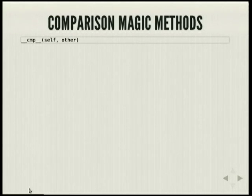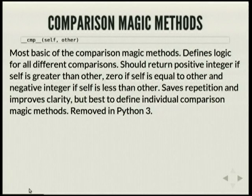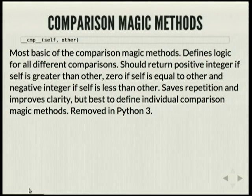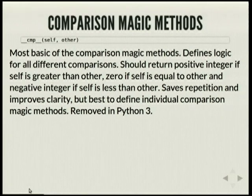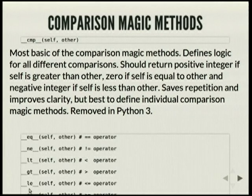So how do you overload operators? There's __cmp__, which deals with comparison of instances. It returns a positive integer if the current instance is greater than the one you're comparing it with, zero if equal, and a negative integer if less than. This has been removed in Python 3 because it's confusing, and you can use the other magic methods to actually compare stuff.